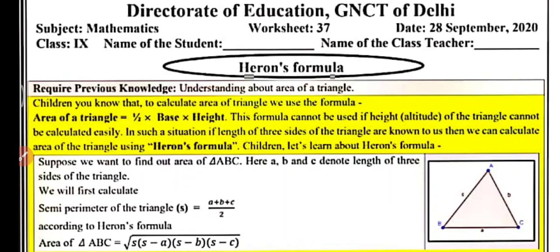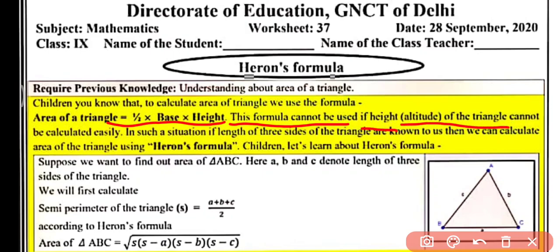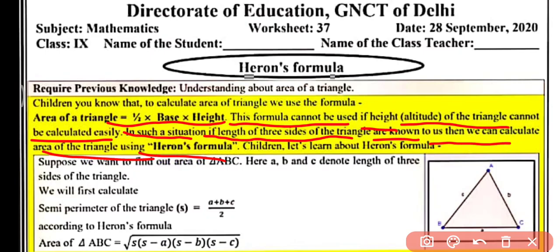To find the area of a triangle, you know that we use the formula: area of triangle equals one-half into base into height. This formula cannot be used if the height, that is the altitude of the triangle, cannot be calculated easily. So in such a situation, if the length of all three sides of the triangle are known to us, then we can calculate the area using Heron's Formula.